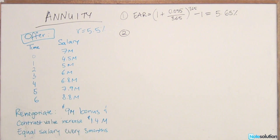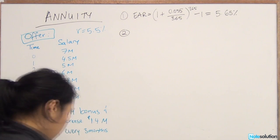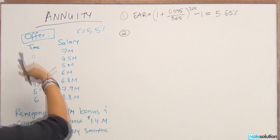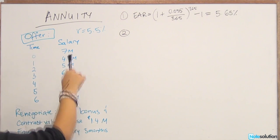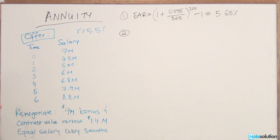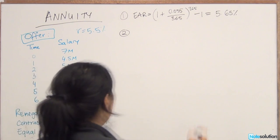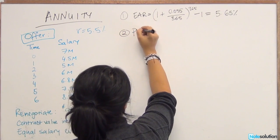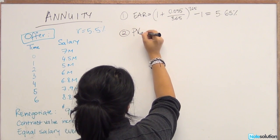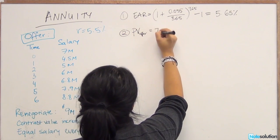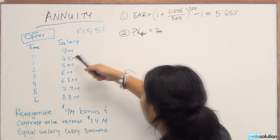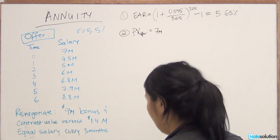So step two is we're going to find the present value of the offer, of the contracted offer. The present value of the offer is just the present value of each cash flows individually, and you're going to use your annual rate of 5.65% to discount it. So the present value of the offer is $7 million. You don't need to discount it because you're receiving that today. It's time period zero.